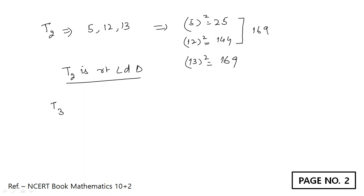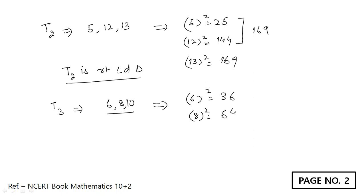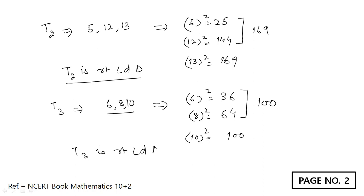What about T3? The sides are 6, 8, and 10. Square of 6 is 36, square of 8 is 64, and square of 10 is 100. The sum of 36 plus 64 equals 100. This means T3 is also a right-angled triangle.